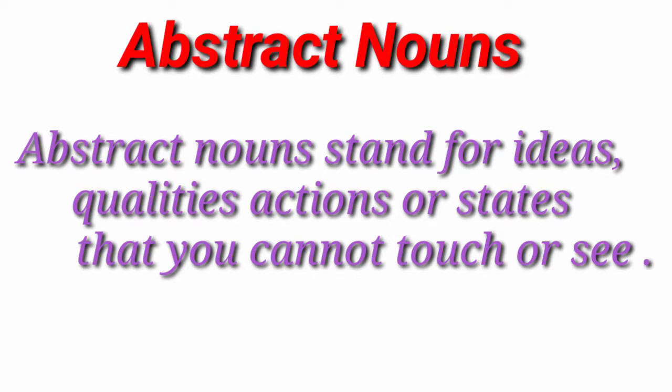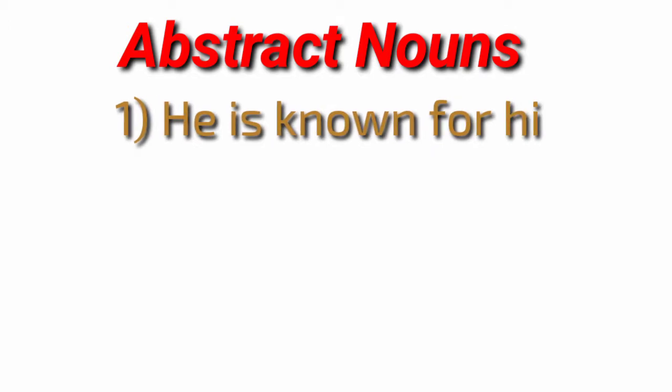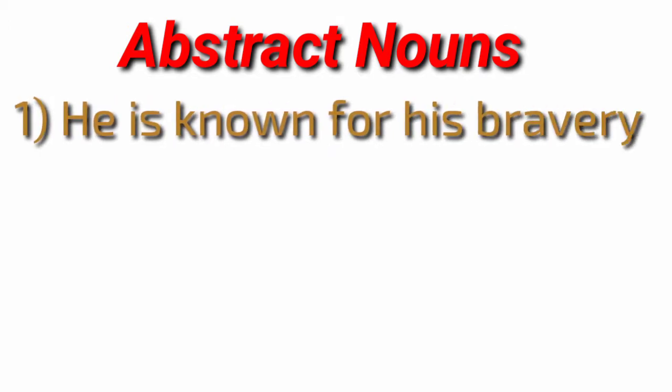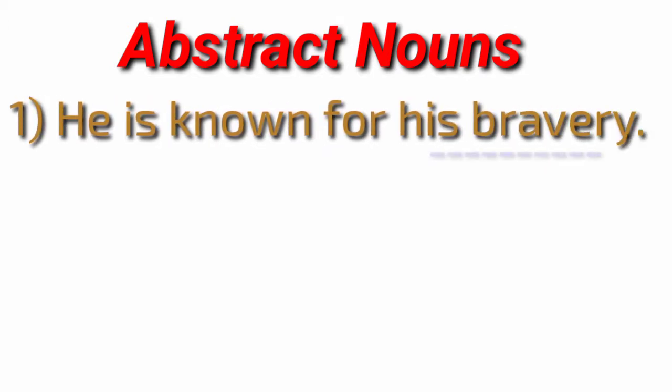Let us see some examples. He is known for his bravery. Here bravery is an abstract noun. Bravery we cannot see or show anyone. It doesn't have any color, it doesn't have any smell, it doesn't have any taste. We cannot touch it. We can just feel it.